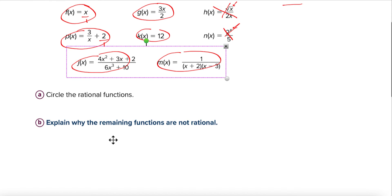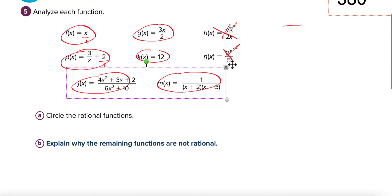Part b says explain why the remaining functions are not rational. These are not rational because a radical x is not a polynomial, and two to the x is exponential — not a polynomial. So we can't divide two polynomials, and therefore we cannot have a rational function.